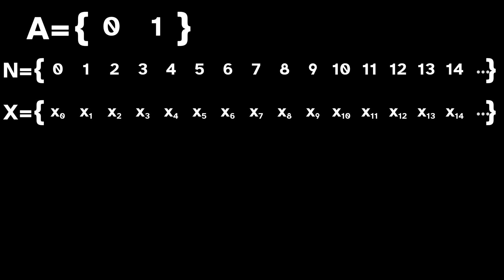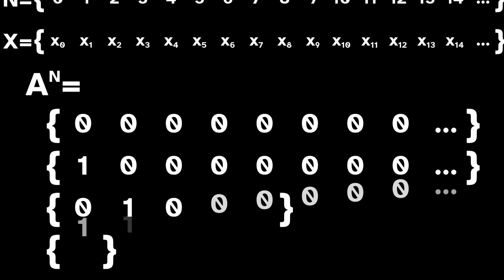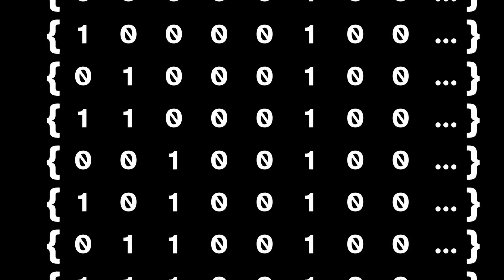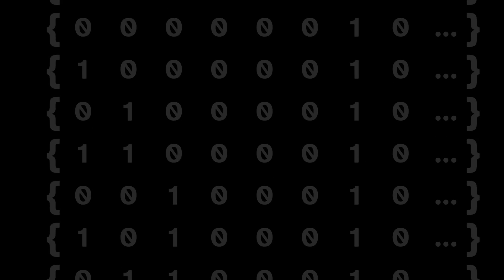Each particular sequence is just one way of choosing one symbol from the alphabet a for every natural number. The space of all possible sequences over the alphabet a is denoted a to the n. This is a massive space containing uncountably many sequences.